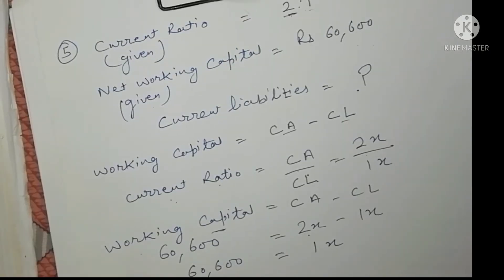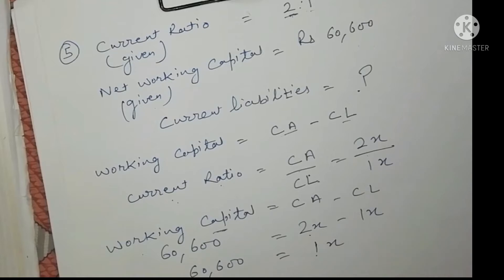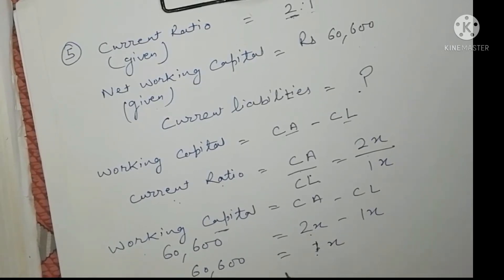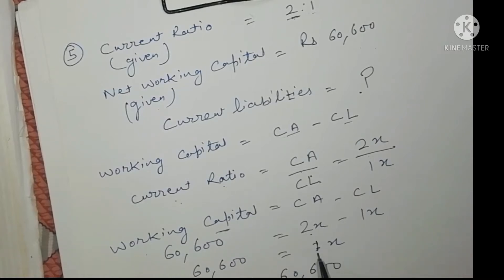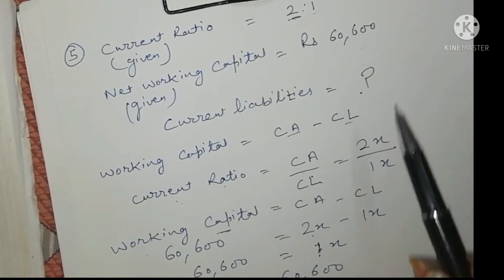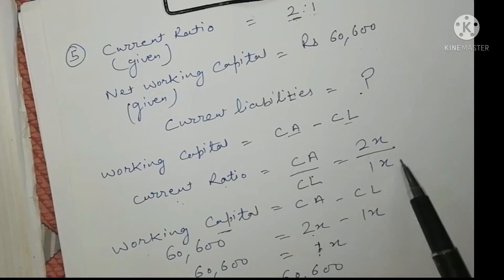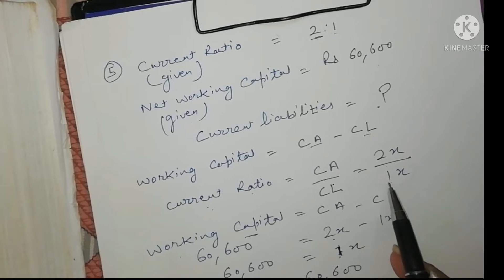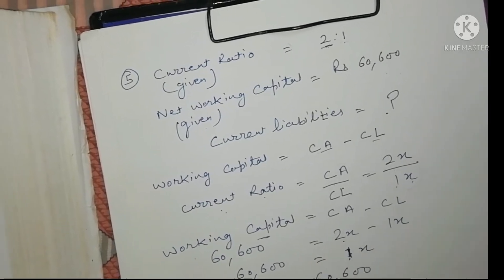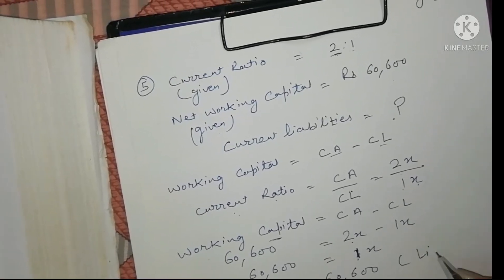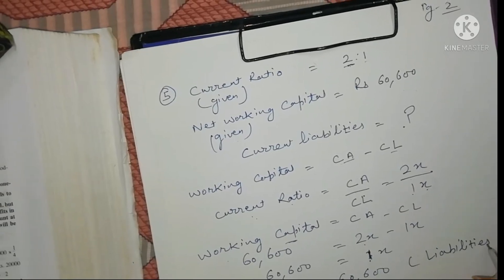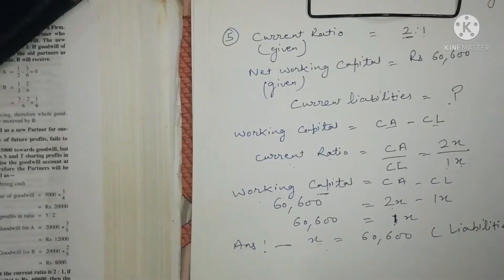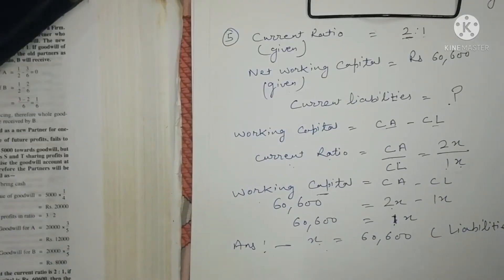X represents the value of current liabilities, so our answer is rupees 60,600 for current liabilities. You can write it as 1x or simply x — it represents current liabilities. In this way you can solve for current liabilities if the other figures are given, and calculate other values as well.